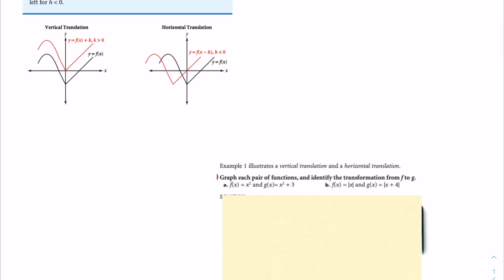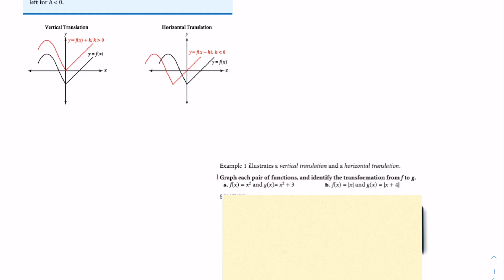For the first problem, example 1 illustrates a vertical translation and a horizontal translation. Graph each pair of functions and identify the transformation from f to g. You will need a graphing calculator for this — pause the video to graph the functions on your graphing calculator.